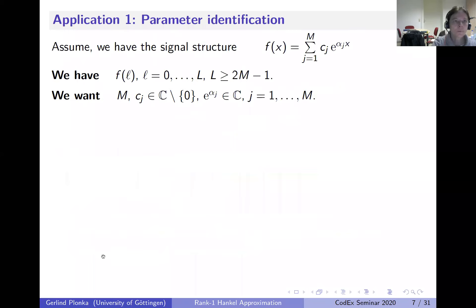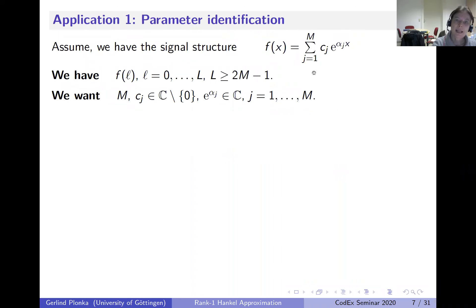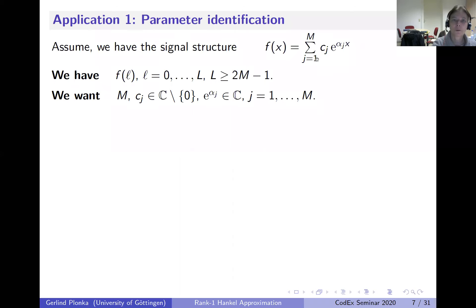I'd like to go closer to one application: parameter identification with exponential sums, which is connected with Prony's method. Assume you want to find a signal with a known structure—specifically, a sum of exponentials. We know the structure in advance but not the parameters. We do not know the c_j, we do not know e^{α_j}, and depending on the application we may not even know the number of terms m.